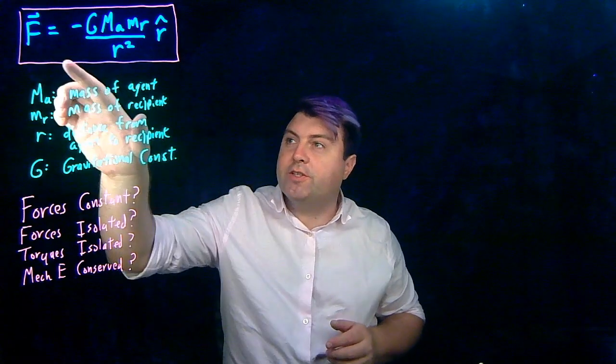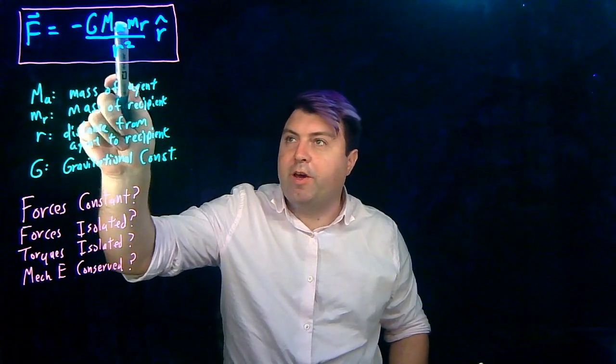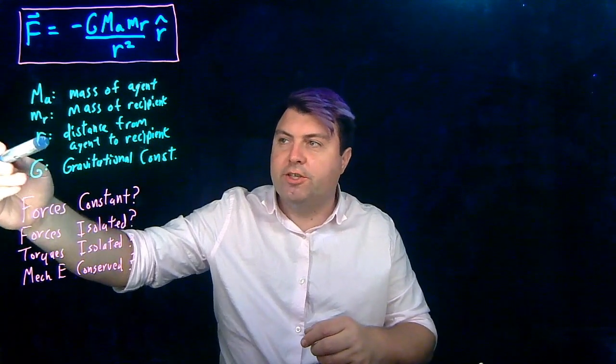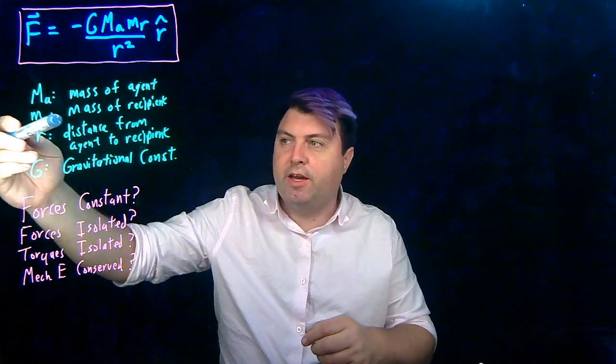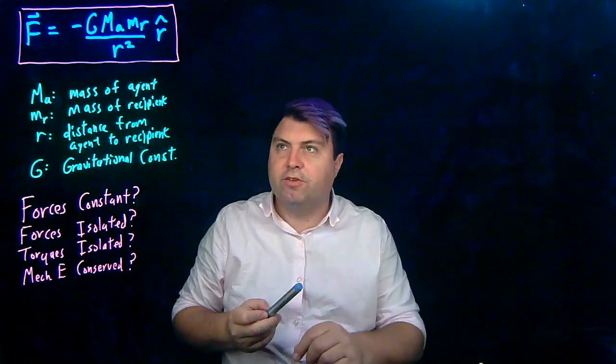Greetings. So we've just discovered our new universal force from gravity: negative G m_A m_R over r squared r hat. We have our definitions - m_A is the mass of the agent, m_R is mass of the recipient, r is the distance from the agent to the recipient, and G is our gravitational constant.